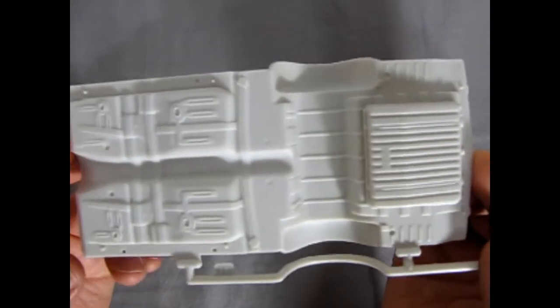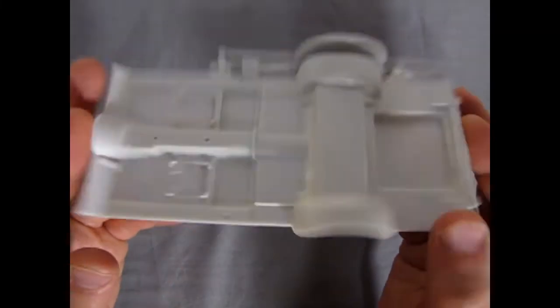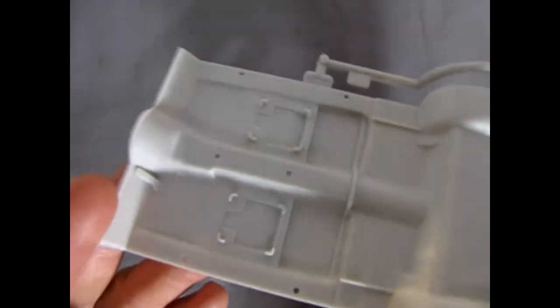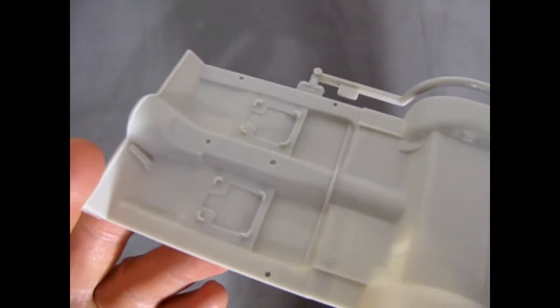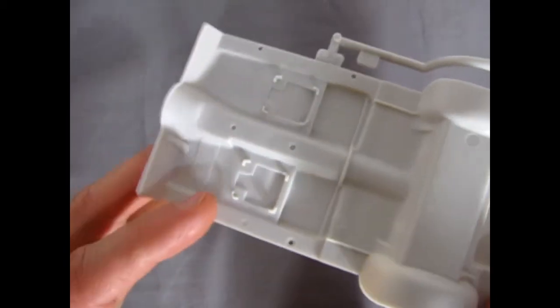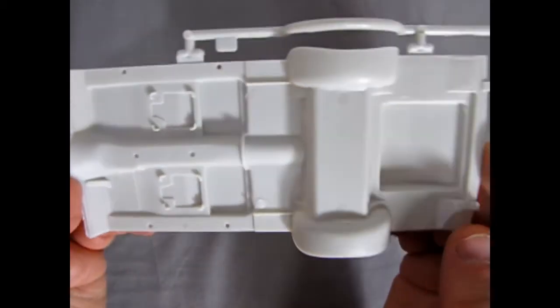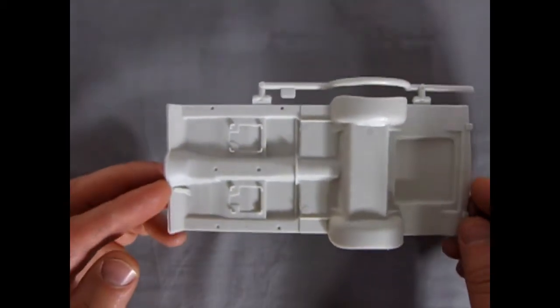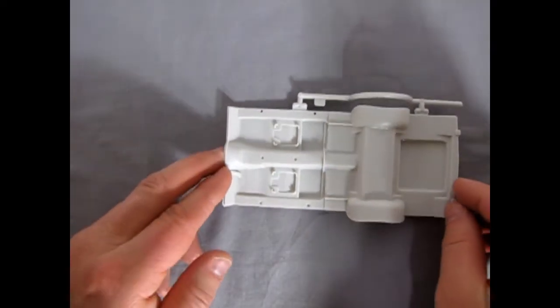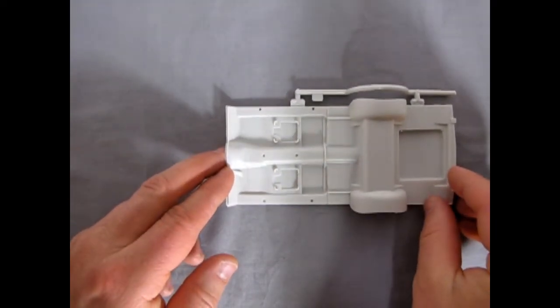But again, here, look at all the nice details. Turn it over again. You can see the floor pedal in the little L brackets here for mounting your seats in. So again, really very nice interior and chassis pan.